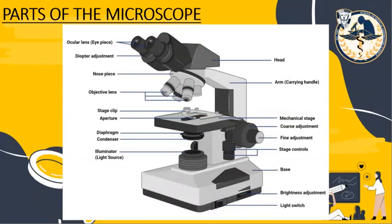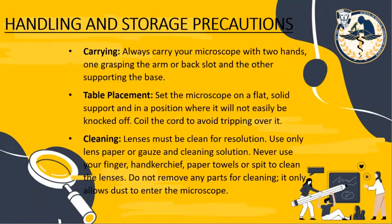For proper handling of the microscope: when carrying it, we need to use both hands — the right hand to hold the arm and the left hand to hold the base — in order to safely transfer it from one place to another. For table placement, make sure the table is stable, the surface is flat and solid, to avoid accidents and prevent the microscope from falling.